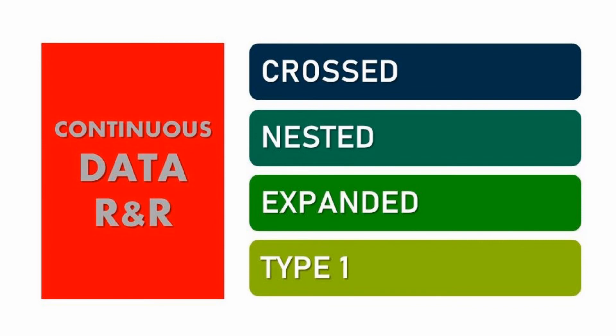The last type for continuous data is the Type 1 Gauge R&R. This is for special cases where you have only one reference or master part. Because there is only one, you measure it many, many times. The manuals recommend 80 measurements; a minimum of 50 is what is commonly used. That is the Type 1 Gauge R&R. Each of these types will have its own dedicated video where you can go into further detail.